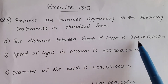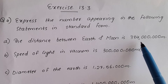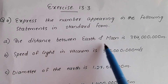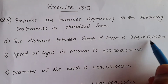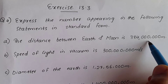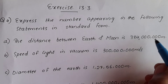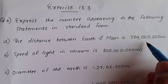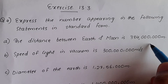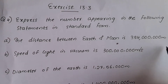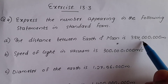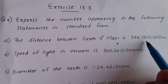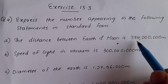We can express this number in the standard form. The standard form is k into 10 raise to m, where 1 is less than or equal to k, which is less than 10. That's why we have a number between 1 and 10.